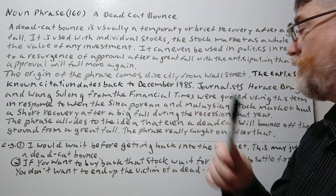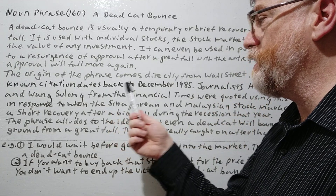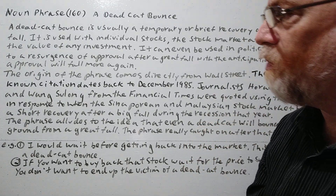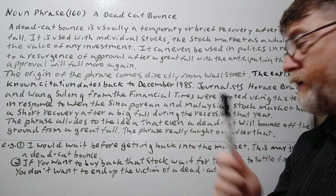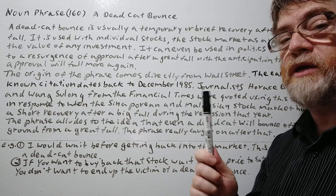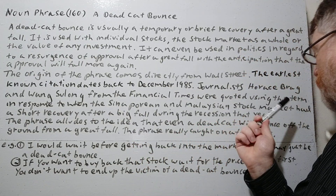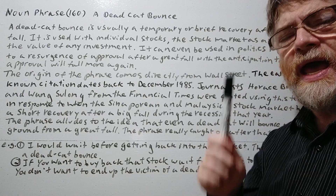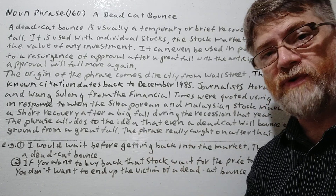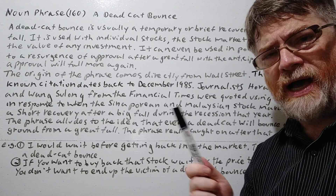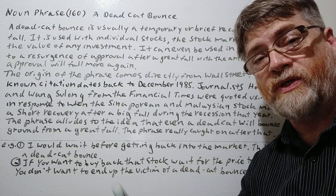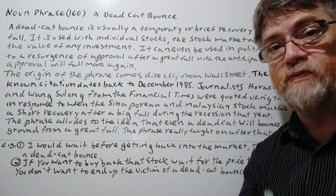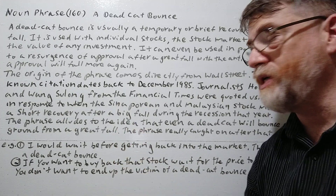The origin of the phrase comes directly from Wall Street. The earliest known citation dates back to December 1985. Journalists Horace Bragg and Wang Sulong from the Financial Times were quoted as using this term in response to the Singaporean and Malaysian stock market, when the stock market had a short recovery after a big fall during the recession that year. They were likely not coining it, but repeating how it was commonly said at the time. This was the first time it seemed to get into the media or newspapers — describing how on Wall Street, this is what you call a situation like that.